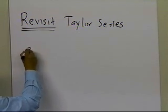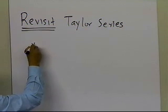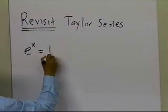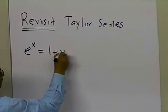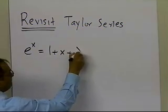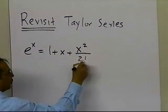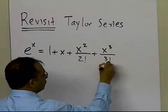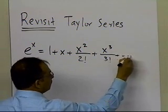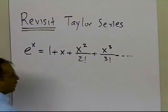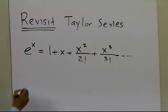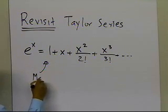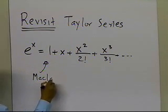I'm sure that you must have seen a series like this one: e to the power of x is 1 plus x, plus x squared over factorial 2, plus x cubed over factorial 3. This is one of the famous examples of a Taylor series — in fact, it's also called a McLaurin series.